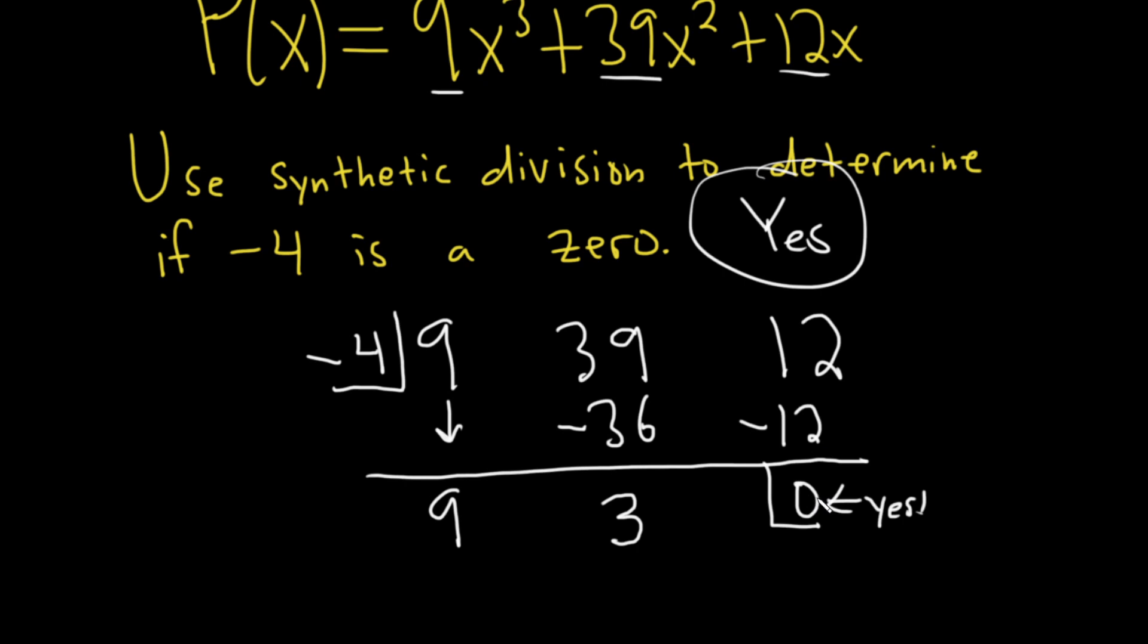And if you don't get a remainder of 0, then it's not. So very useful. It's really fast to do synthetic division. I think it's easier to do this than actually plug in the number. That's just my opinion, but it just seems faster. There's smaller computations usually.